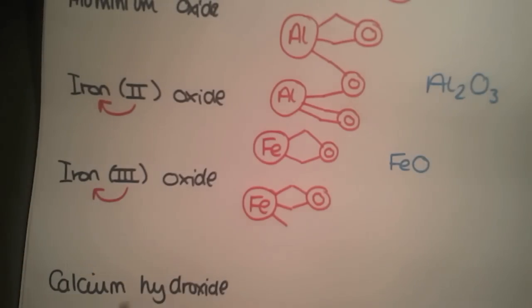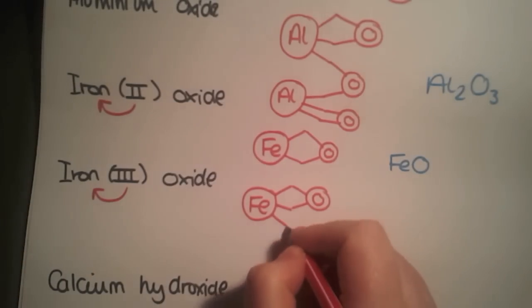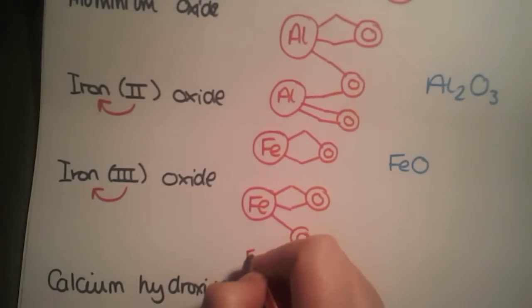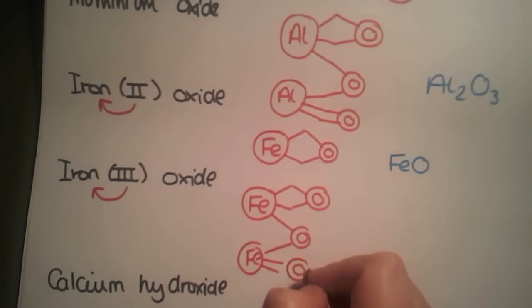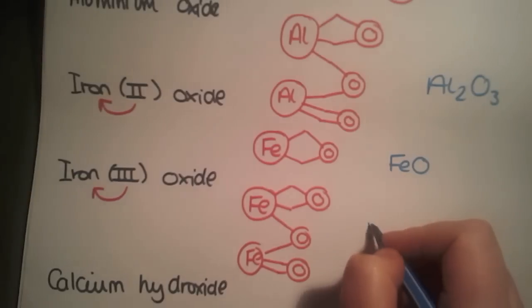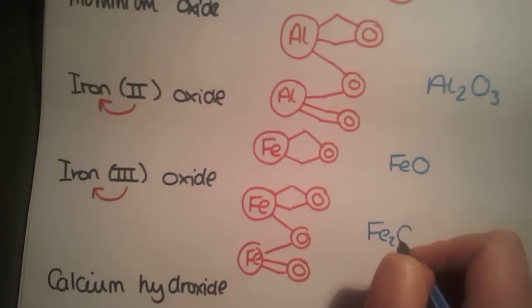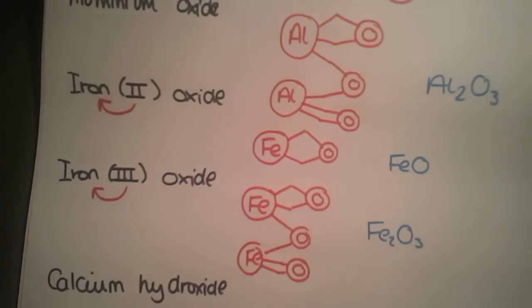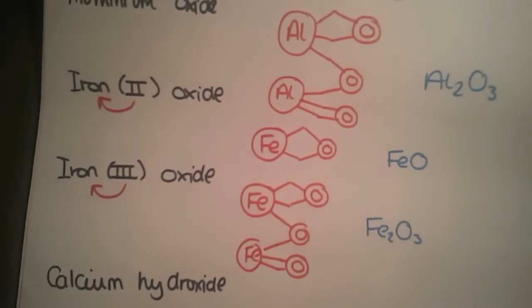So we just need to keep putting in oxygen and Fe until we have no more lines spare. Count up what you have, you should have Fe2O3. Then we're ready to move on to three-element compounds.